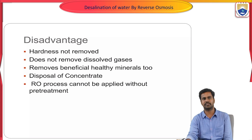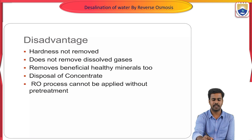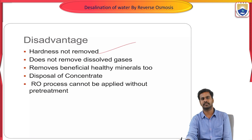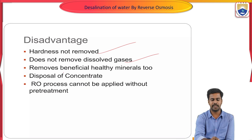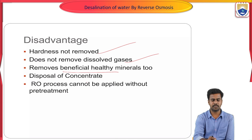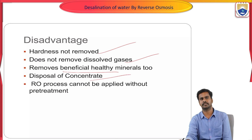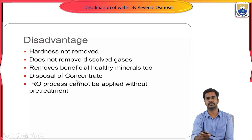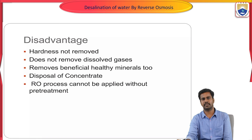Coming to the disadvantages of reverse osmosis: by using this method, we cannot remove dissolved gases, and in some cases it removes beneficial healthy minerals too. There is also concern about disposal of concentrates. Additionally, reverse osmosis cannot be operated without pre-treatment — it does not work without pre-treatment of the water. These are the disadvantages of reverse osmosis.